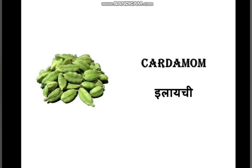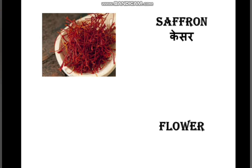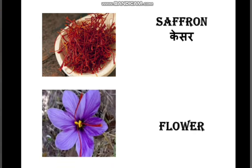This is the picture of saffron, which is a very expensive spice. In Hindi it is called kesar. This is the picture of its flower — the flower is purple in color, and one flower has only three strings. That is why this spice is very expensive.